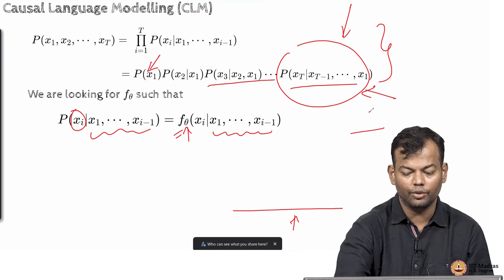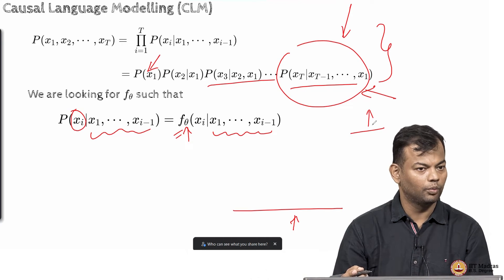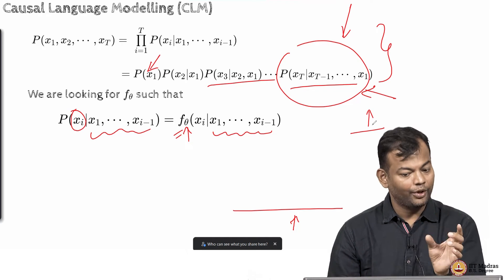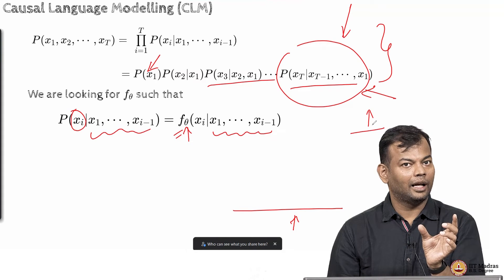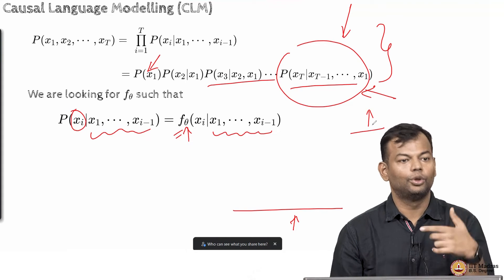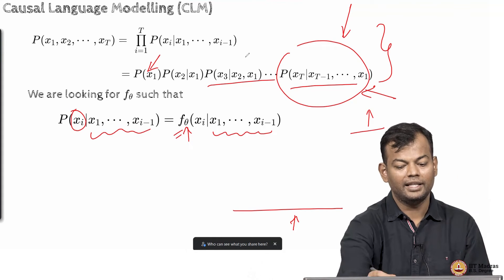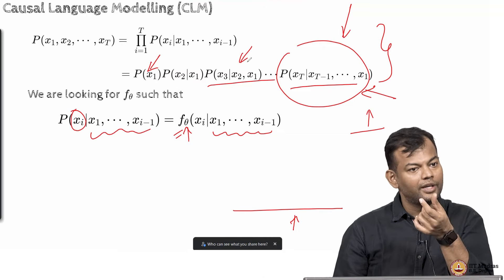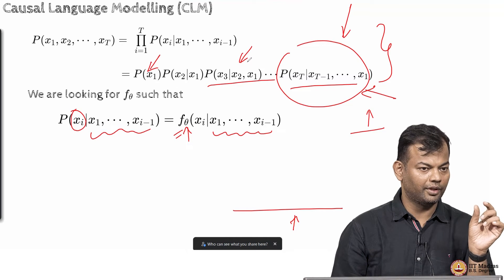So, you give it a certain input and you expect the k plus 1th word. Right? And that is what I wanted to say that I cannot have multiple. I would not want to have multiple functions. One separate function which takes in two words as input and gives me the probability of the third word.